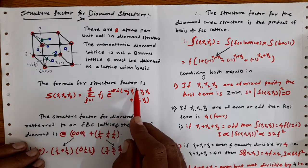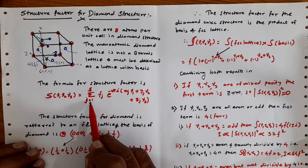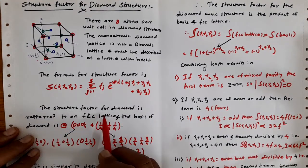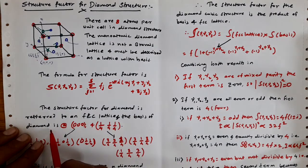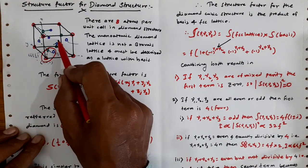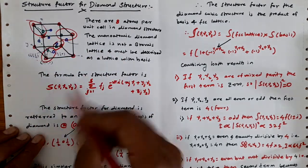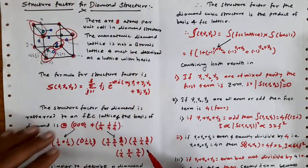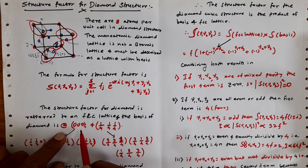The structure factor formula is given in terms of ν₁, ν₂, ν₃ as a summation running over j from 1 to s, involving fⱼ and an exponential factor. The structure factor for diamond is referred to as an FCC lattice with a basis. The basis of the diamond structure is a repeating unit, and this basis repeats when you move to the next unit cell on the right.